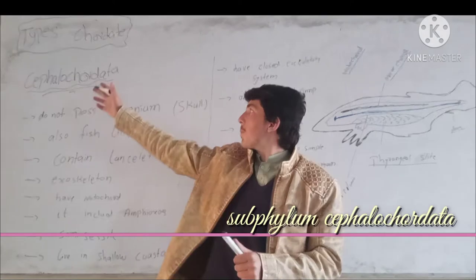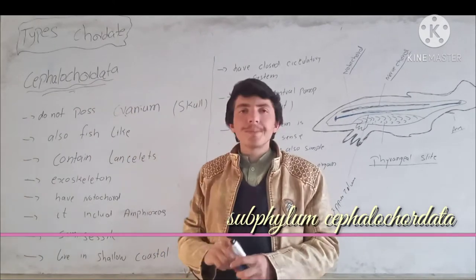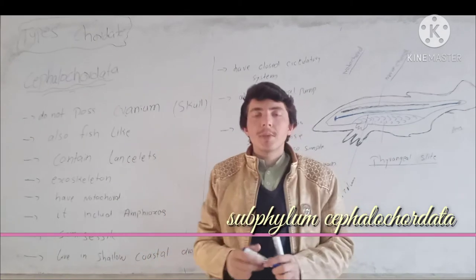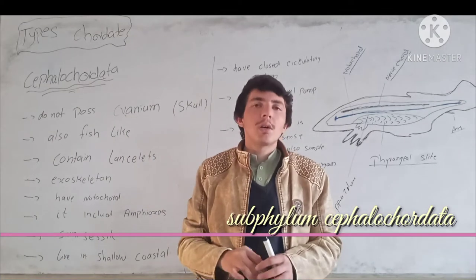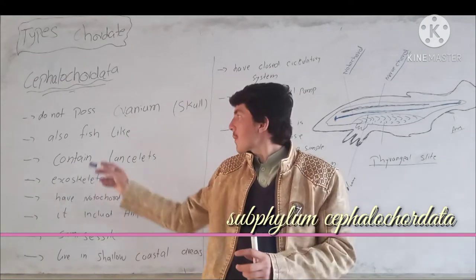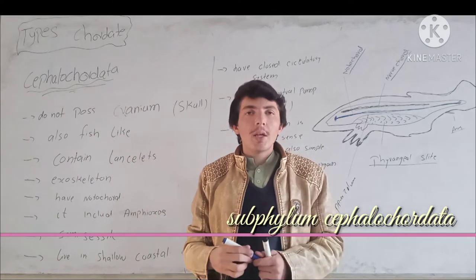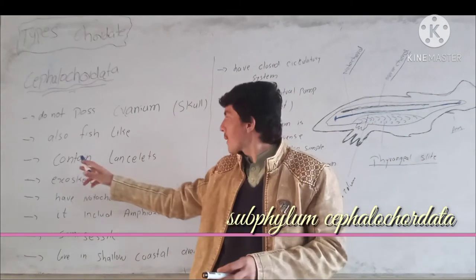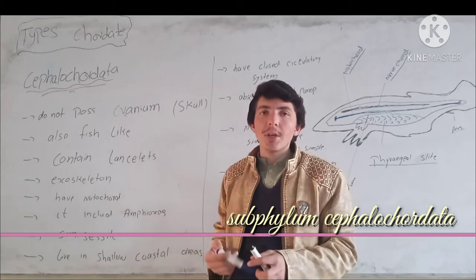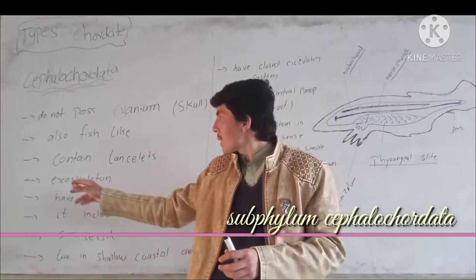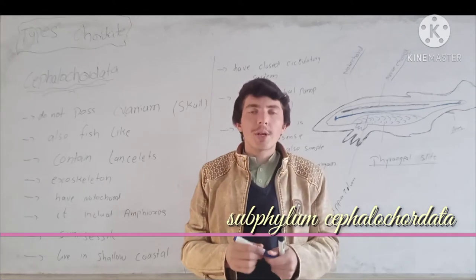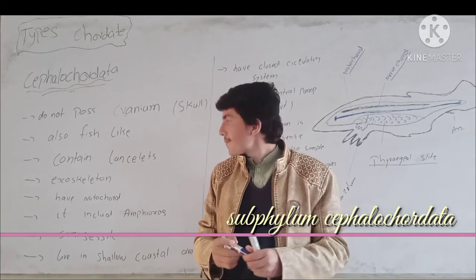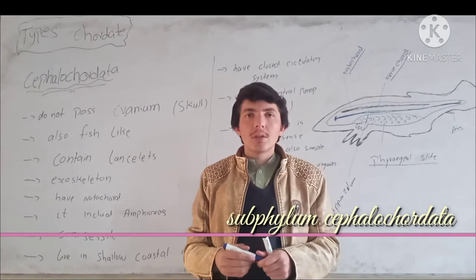The second type of chordate is Cephalochordata. Cephalochordata is also called Amphioxus. This is just not the full description of Cephalochordata. The first type — here is the notochord. In this structure, the base should be the middle layer, and the base will hold the upper layer.